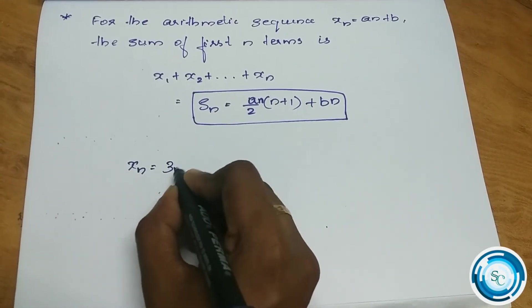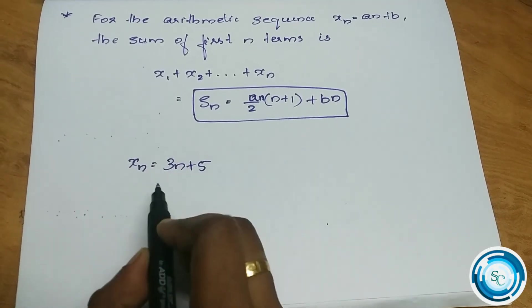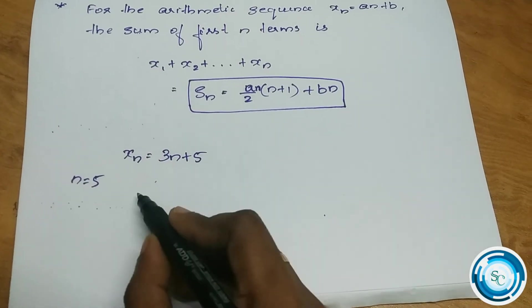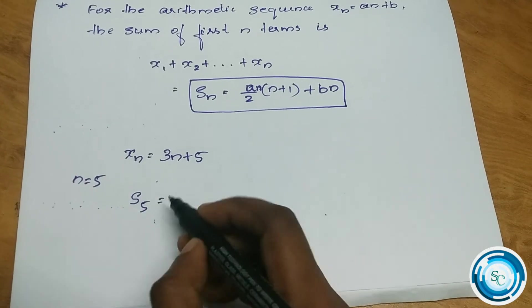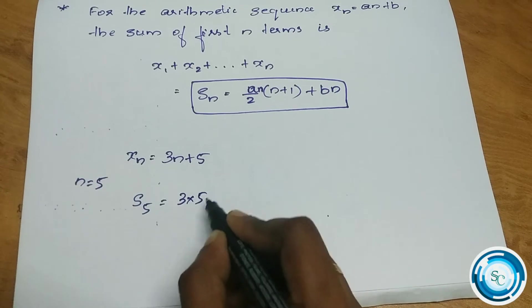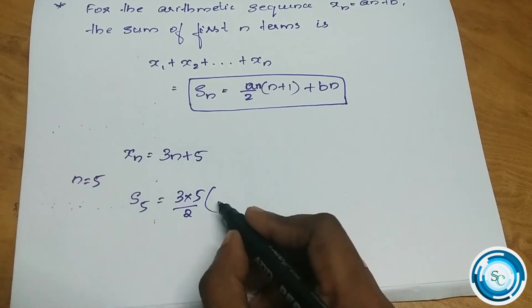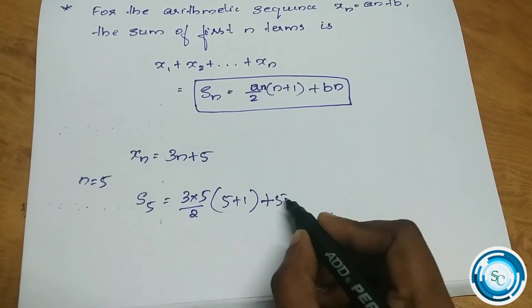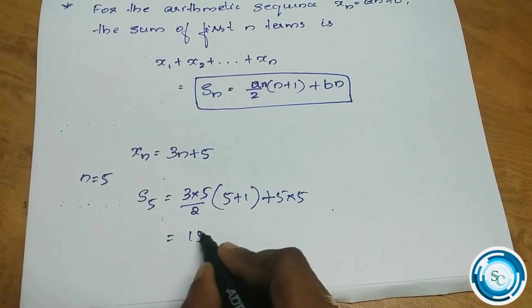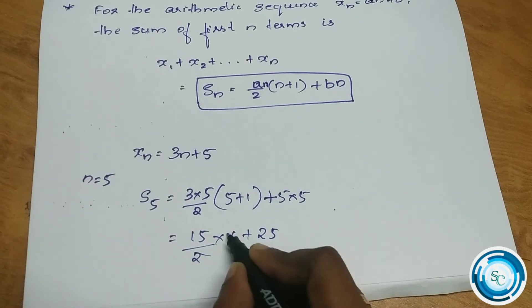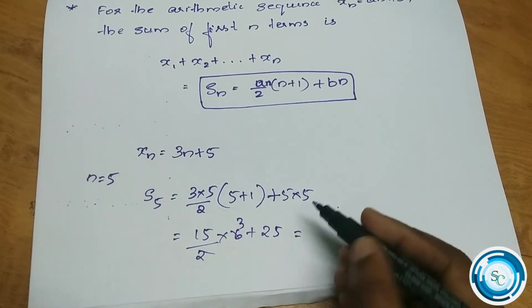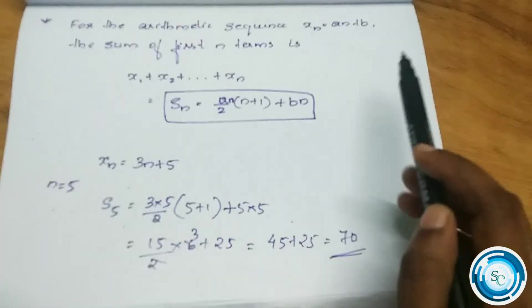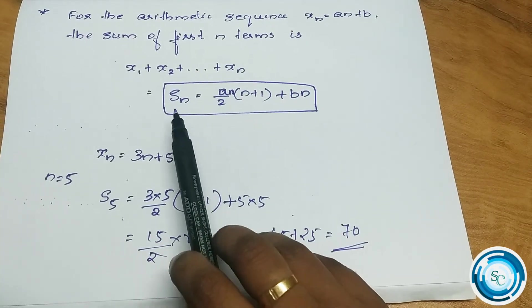For example, if xn equals 3n plus 5, we need to find the sum of the first five terms. Using Sn equals an by 2 into (n plus 1) plus bn: S5 equals 3 times 5 by 2 into (5 plus 1) plus 5 times 5, which gives 45 plus 25, equal to 70.